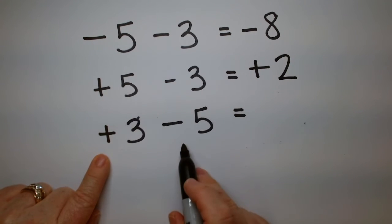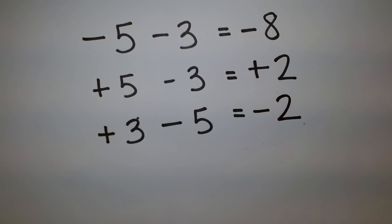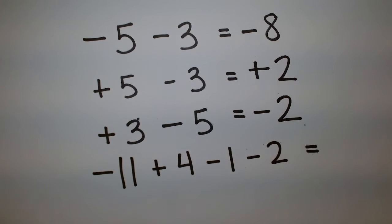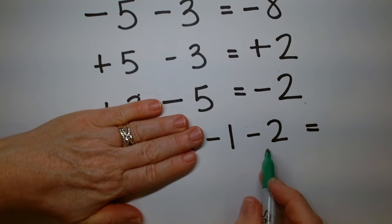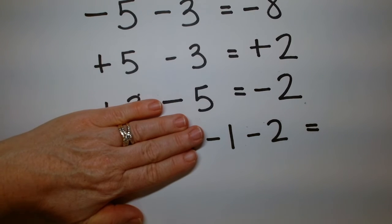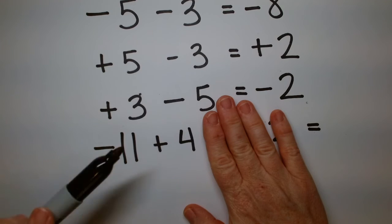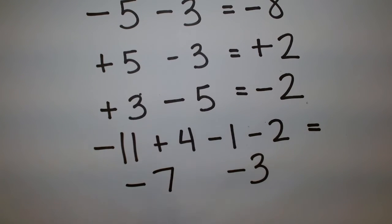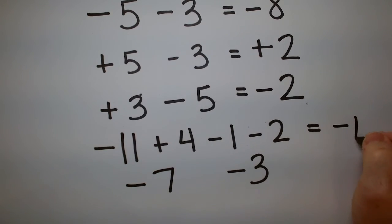Are you seeing a pattern? How about one last bonus problem? If I have negative 11 plus 4 minus 1 minus 2 — what is that? First, minus 1 minus 2: both are negative, so combine 2 and 1 to get negative 3. Then look at positive 4 and negative 11: the 11 is bigger and it's negative, so put that down and take the difference — that's minus 7. Finally, minus 7 and minus 3: same sign, so combine 7 and 3 for negative 10.